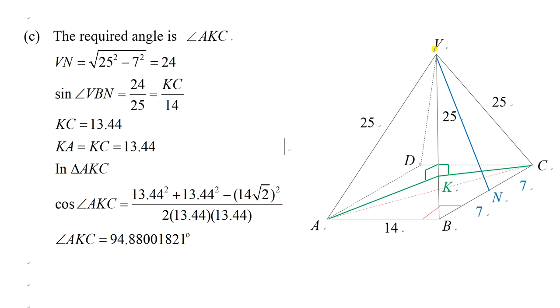Now consider the right angle triangle VBN. Sine angle VBN would be the blue line 24 over VB 25. But on the other hand, in triangle BCK, sine angle VBN equals the green line KC over BC 14. So you can pay attention to this fraction: 24 over 25 equals KC over 14. Therefore KC equals 13.44.